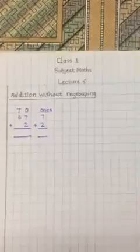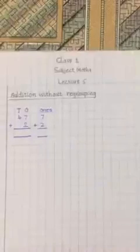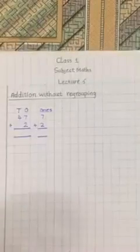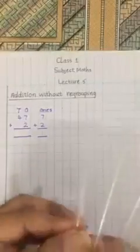I will show you 4 tens. 1 ten, 2 tens, 3 tens, 4 tens. And 7 ones. 1, 2, 3, 4, 5, 6, 7.